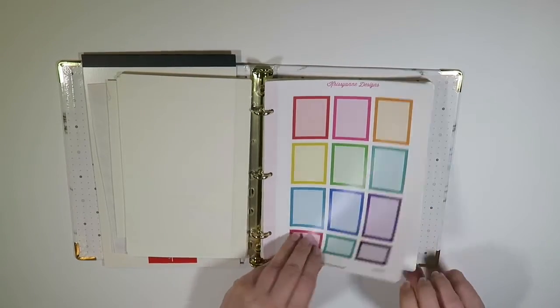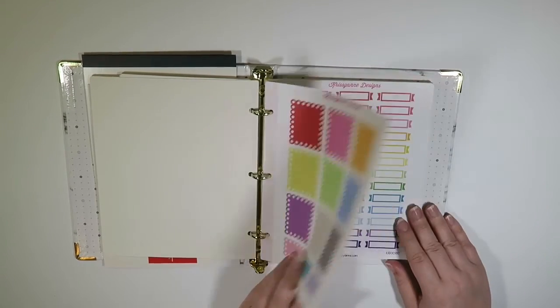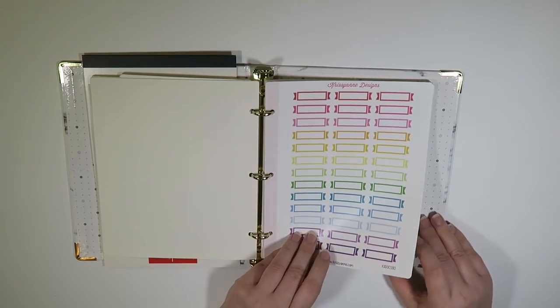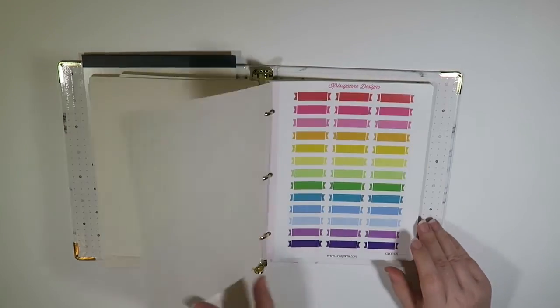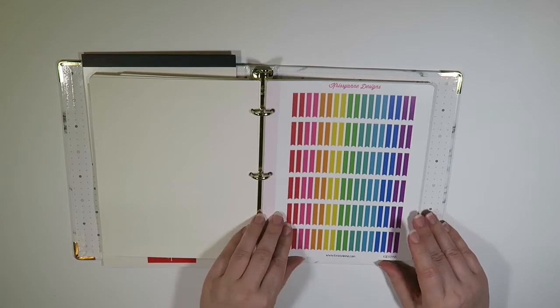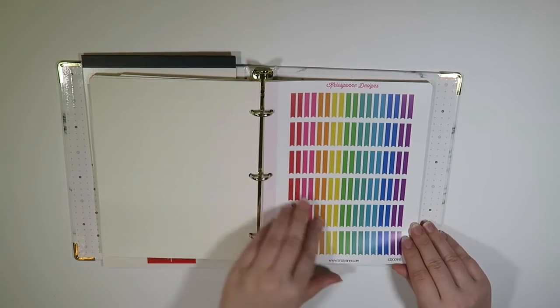So I got the squiggles. I got some full boxes. Another full box with scallops. These are just some flags. I've got more flags and more flags. And these are just kind of the vertical flags.